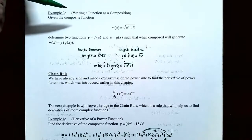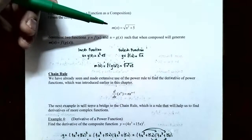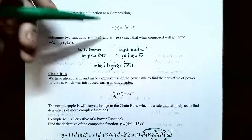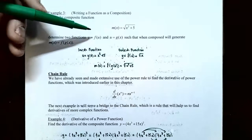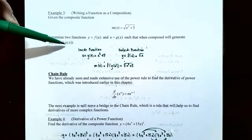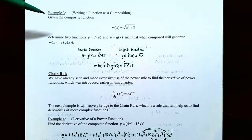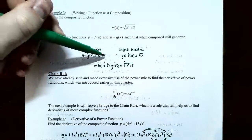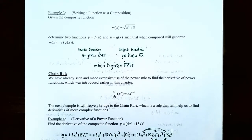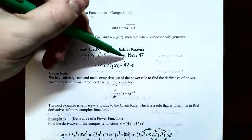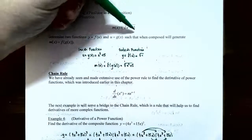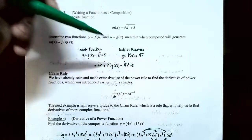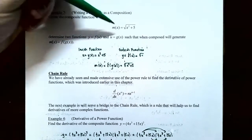Example 3: write m(x) = √(x²+5) as a composition of two functions. Find y = f(u) and u = g(x) such that f is the outside and g is the inside function. Inside the square root we have x²+5, so the inside function is u = g(x) = x²+5. We're plugging that into a square root, so the outside function is f(u) = √u. With these two functions, composing f outside and g inside yields the composite function m(x) = √(x²+5).